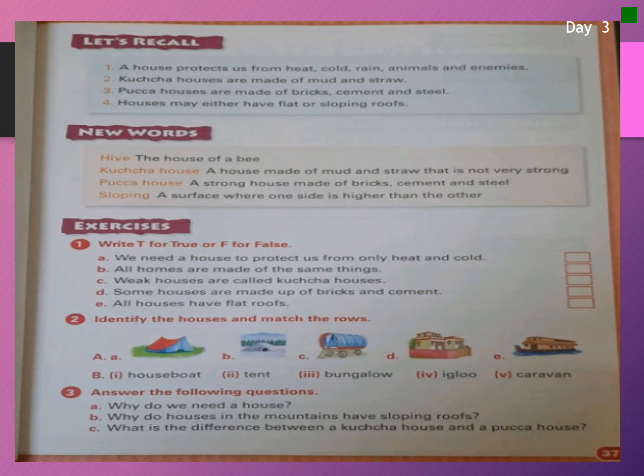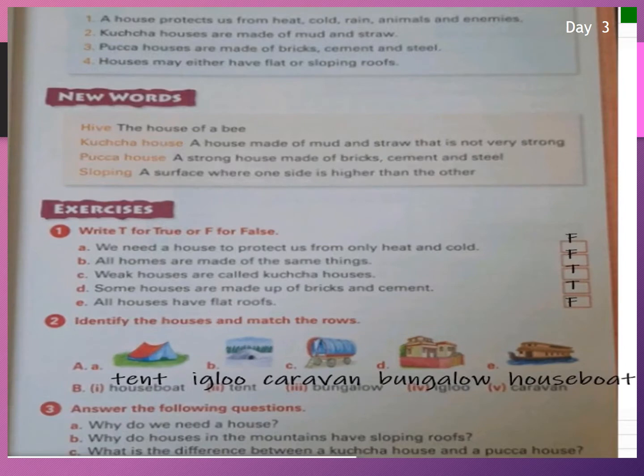Key words: Hive means the house of a bee. Kacha house — a house made of mud and straw that is not very strong. Paka house means a strong house made of bricks, cement and steel. Sloping means a surface where one side is higher than the other.